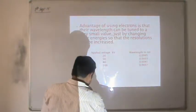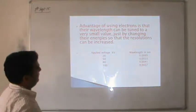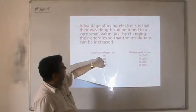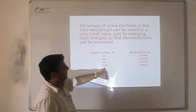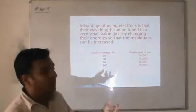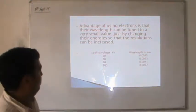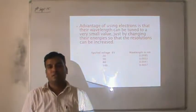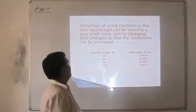If I use an accelerating potential of around 20 kilovolts for the electron microscope, I get λ ≈ 0.0085 nanometers; at 50, 80, and 100 kilovolts, the values are even smaller - much less than 1 nanometer. We are trying to understand the size, shape, and properties of particles in the range of 1 to 100 nanometers. So the electron microscope is capable of characterizing materials in this size range. The advantage of using electrons is that their wavelength can be tuned to a very small value just by changing their energy, so resolution can be increased.